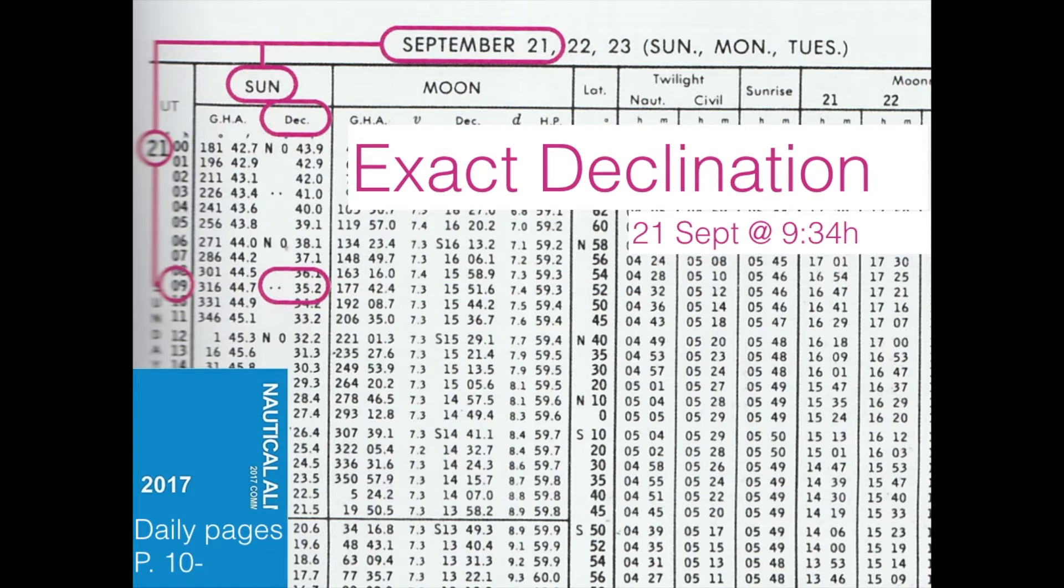And you can see that it's north, zero degrees. That information is a bit further up. And 35.2 minutes north.